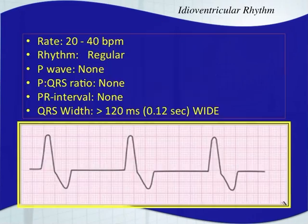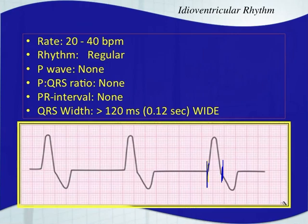So you'll have a wide QRS complex. You should always be able to identify the T wave. The QRS complex is here, and then you have your T wave right after. You have an inverted T wave, and that's typical — the T wave will go in the opposite direction of the QRS complex with the ventricular rhythm.